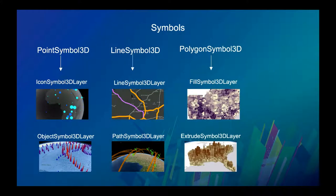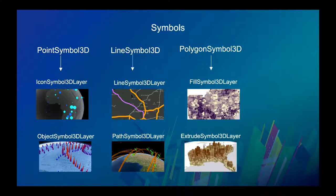In the JavaScript API we have a set of symbols available. If you're familiar with 2D symbology, there are things like simple marker symbol, simple line symbol, and fill symbols. In 3D, the symbology API is a bit more complex. The fundamental symbol classes are Point Symbol 3D, Line Symbol 3D, Polygon Symbol 3D, and also Mesh Symbol 3D. There are rules for which symbol layer types you can use with each.